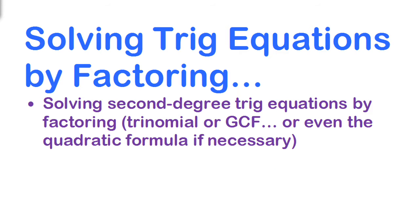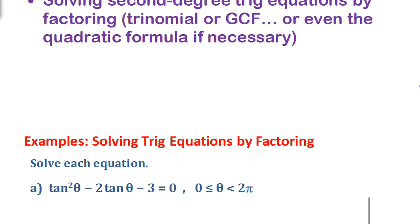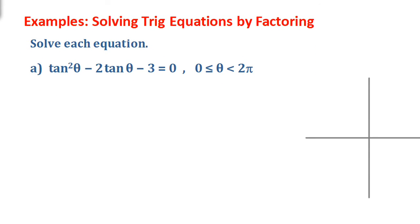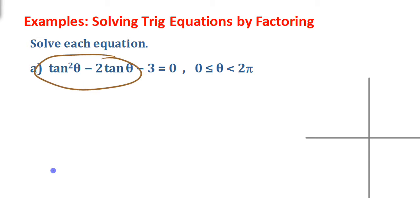What we're talking about here is a trig equation that's a second degree trig function because it's got the trig function to the power of two. You have that trig function to the power of two, but then you have another term where it's not to the power of two. So we're not going to be able to use isolation because we can't combine those two terms together. We're going to have to try and factor this, or failing that, use the quadratic formula.